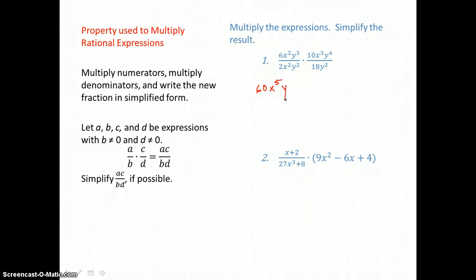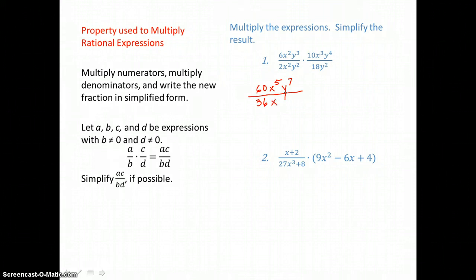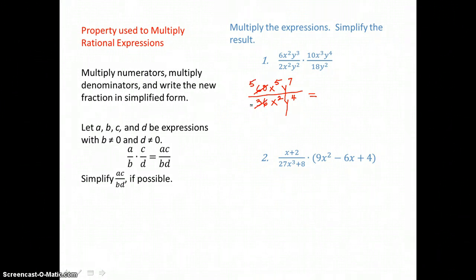When multiplying like bases, remember we add exponents. So I have 3 factors of y and 4 factors of y — that's a total of 7 factors of y in the top. In the bottom, I have 2 times 18, that's 36. How many factors of x? Just 2. How many factors of y in the bottom? 2 and 2, that's a total of 4. Now looking for like factors top and bottom to simplify — 12 goes into 60 five times and into 36 three times, so I can cancel that factor of 12 top and bottom.